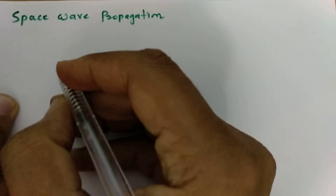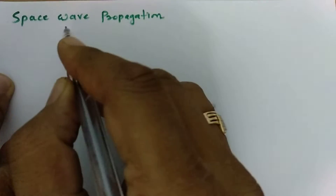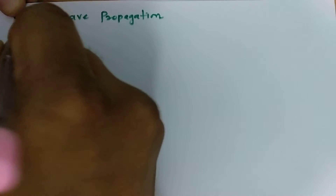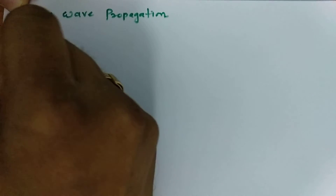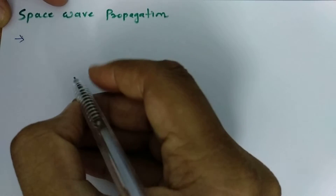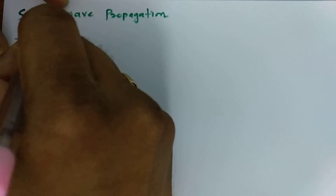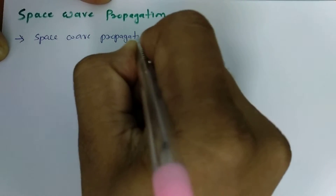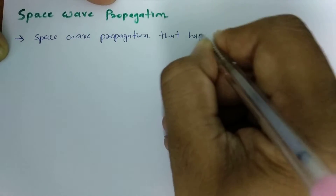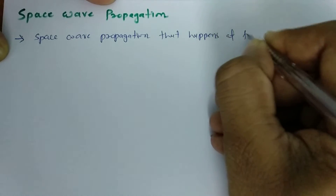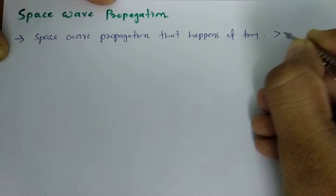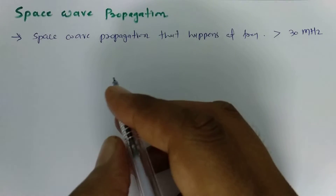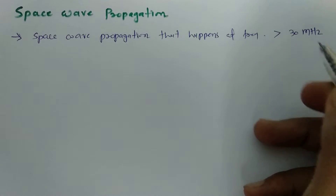Welcome to the antenna and wave propagation playlist. In this session I will be explaining space wave propagation. Space wave propagation happens for high frequencies, specifically at frequencies greater than 30 megahertz.